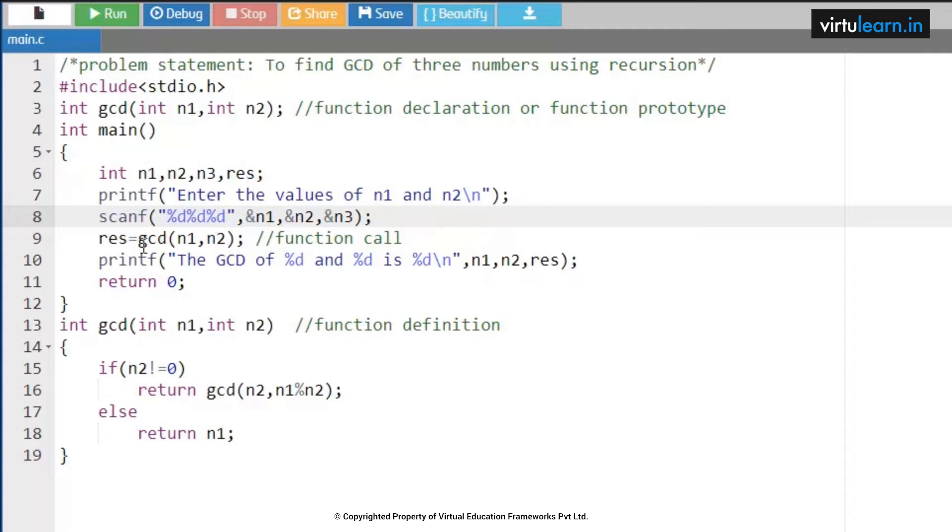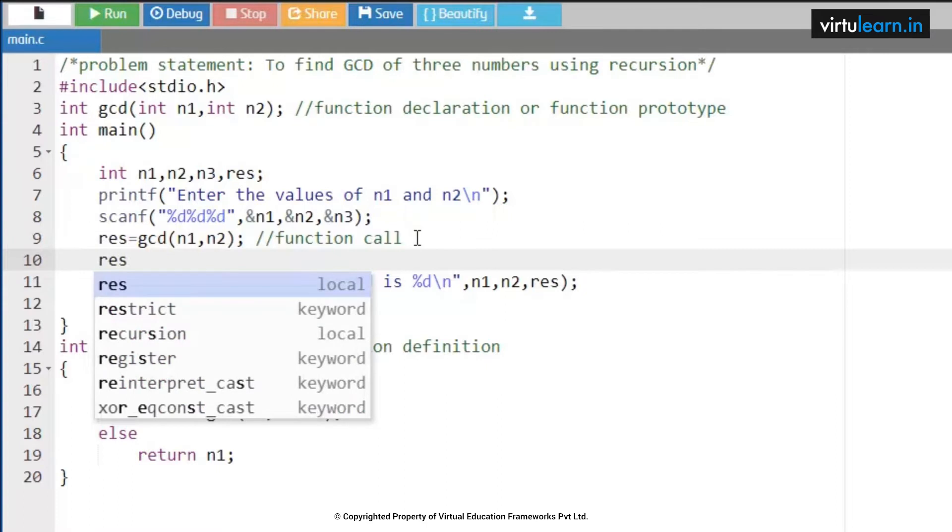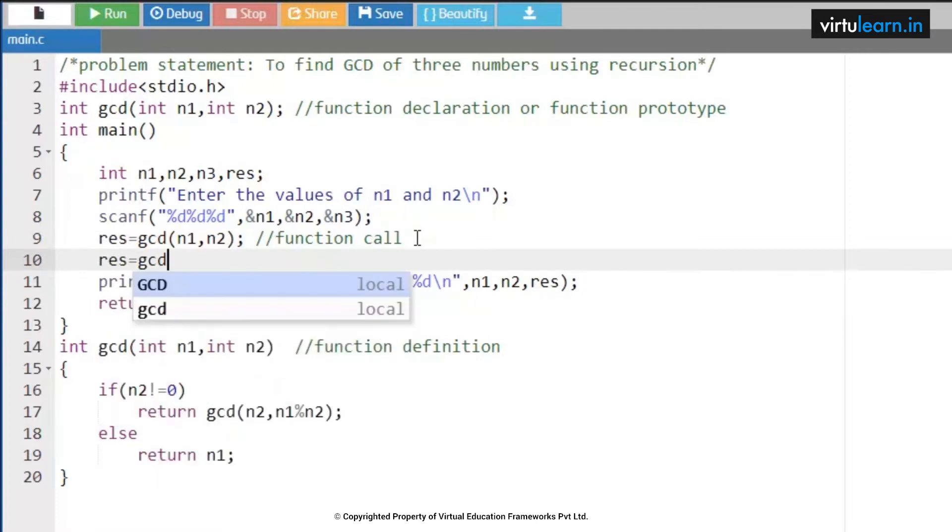So here in the function call, first time I am finding the GCD of two numbers, and then I am going to apply that result to another variable. Whatever result value you are going to get, you are going to apply for the number three, that is n3 comma res. Now we are going to find out the resultant value with the third number.